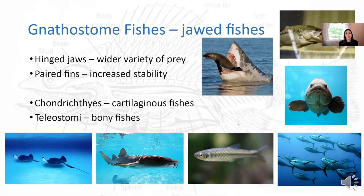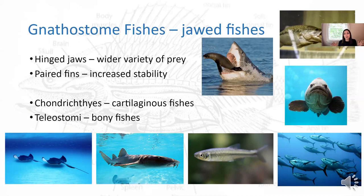Moving on to the gnathostomes, or the jawed fish. Most fish have jaws, and they have hinged jaws which allow for a wider variety of prey. They have paired fins — those pectoral and pelvic fins — which increases stability. With those two adaptations, it opens a much wider range of environments and niches. The gnathostomes are separated into two groups: the cartilaginous fishes, or chondrichthyes — sharks, rays, skates — and then the teleost fish, or bony fishes.